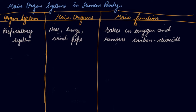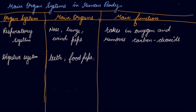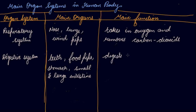Next is the digestive system. The main organs are the stomach, teeth, food pipe, and small and large intestines. Food is chewed by the teeth, then passes through the food pipe into the stomach and intestines. The main function is to digest and absorb nutrients necessary for growth and maintenance of the body.